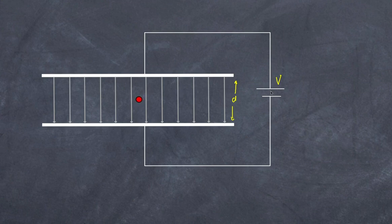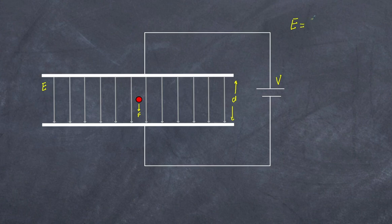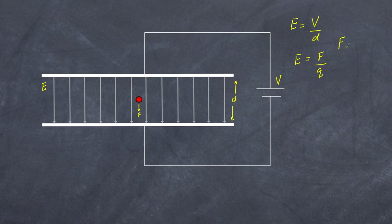Let's look at the relationship between these things. The electric field is set up by applying a voltage over a certain distance, and the electric field is defined as the force per unit charge. Combining those two things, we can see that the force is equal to VQ over D.